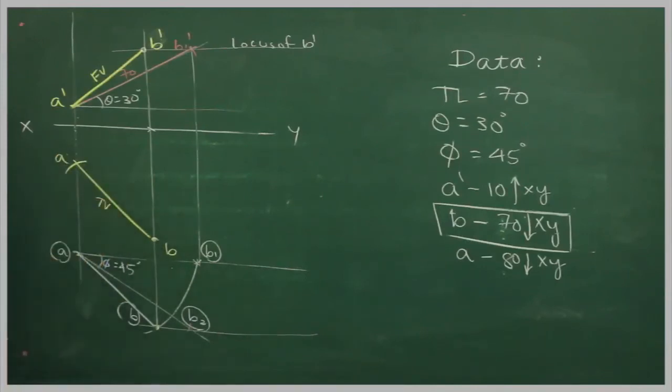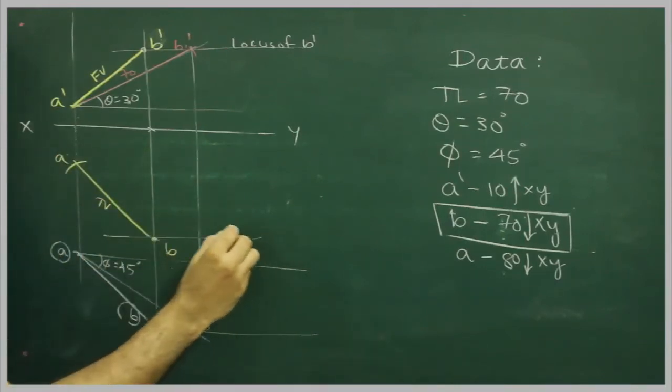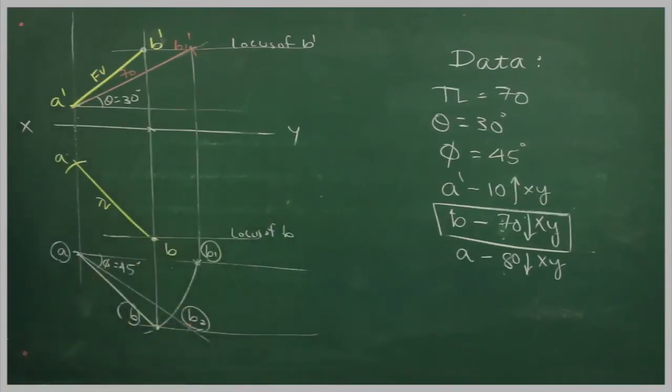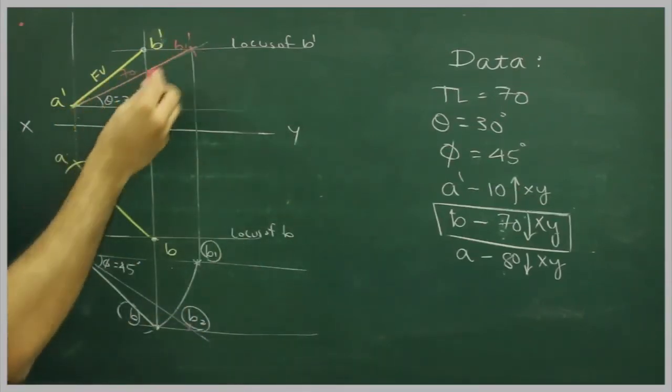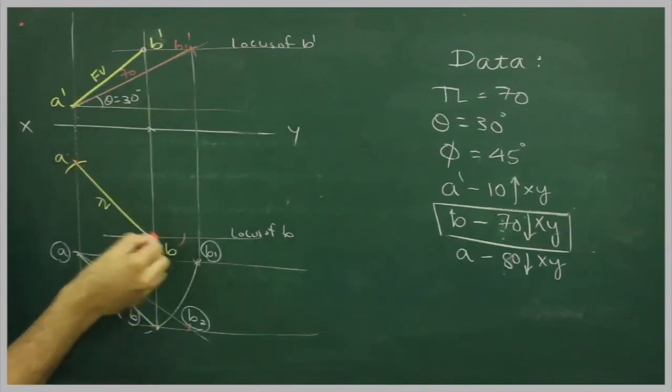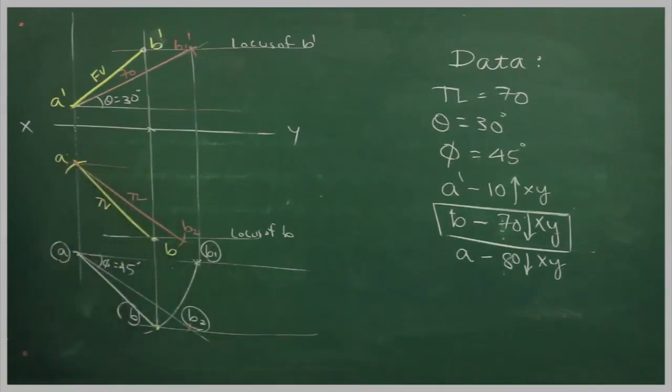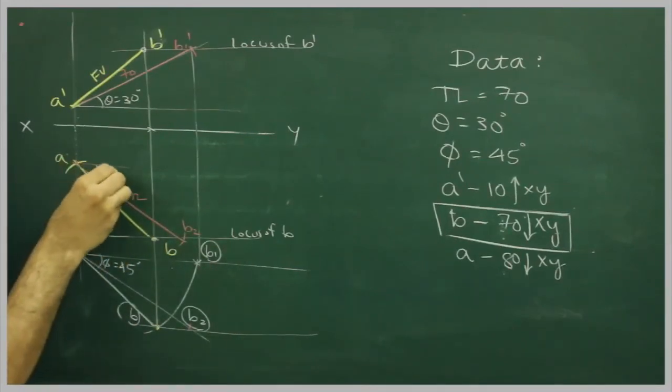I can draw locus of b, and I can take true length which is 70, and from a I will cut on this line. So this is true length with angle phi.